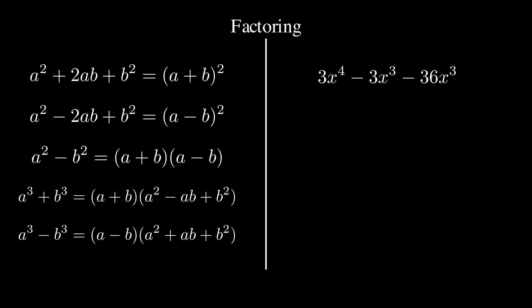How about a trickier one? 3x to the fourth minus 3x cubed minus 36x squared. We can factor out a 3x squared, and then reducing the trinomial inside, we get (x - 4)(x + 3).